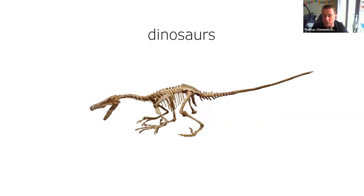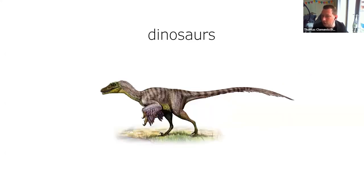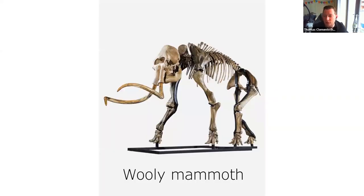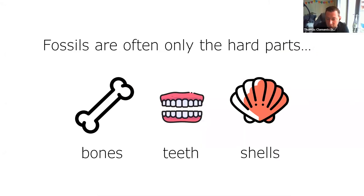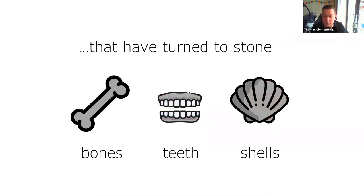That's true of dinosaurs as well. Whenever you see dinosaurs in museums they'll always be the skeletons, even though we know they probably had lots of fleshy bits — skin, muscles, and might have even had feathers. Similarly, the woolly mammoth: we know what they looked like from living relatives and reconstructions, with amazing hair and a big trunk, but we don't find any of that in the fossil record. Predominantly we only find the hard parts — bones, teeth, and shells — and those hard parts themselves have turned to stone.